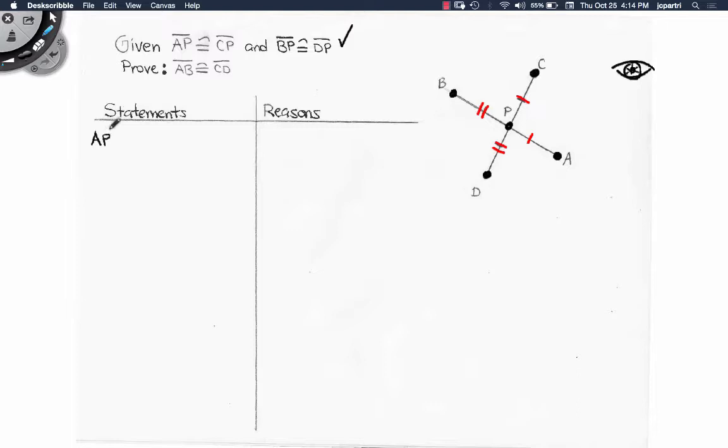So I can start the proof off by saying that AP is congruent to CP. And I can say that BP is congruent to DP. Reason? Given.